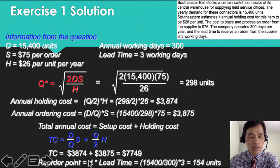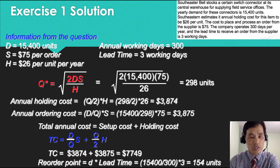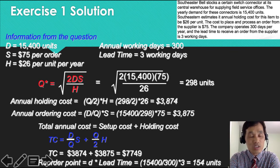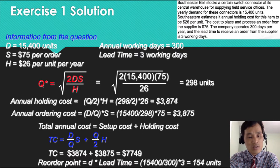Daily demand times lead time. Daily demand is annual demand 15,400 divided by the number of working days to find out the daily demand, multiplied by lead time. Lead time is given as three days. Therefore, you have to have 154 units. Whenever your inventory reaches 154 units, you have to reorder.